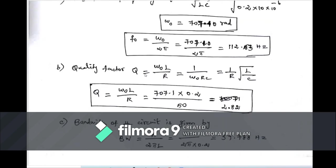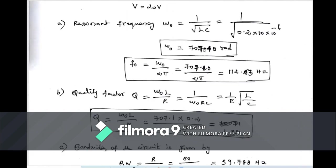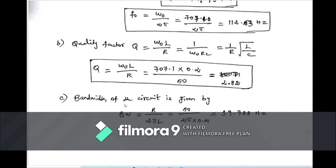Quality factor using Q = ω₀L/R: ω₀ = 707.1, L = 0.2, R = 50. Q = (707.1 × 0.2) / 50 = 2.82. Quality factor is dimensionless.